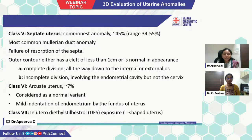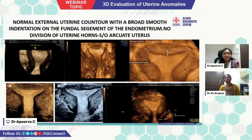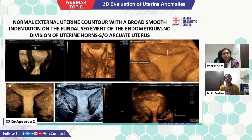Class 6 is arcuate uterus, ranging around 7%. It is considered a normal variant with mild indentation of the endometrium by the fundus of the uterus. Class 7 is intrauterine diethylstilbestrol (DES) exposure — that is, T-shaped uterus. These are the images of arcuate uterus, where there is a normal external uterine contour with a broad smooth indentation on the fundal segment of the endometrium, with no distension of horns.